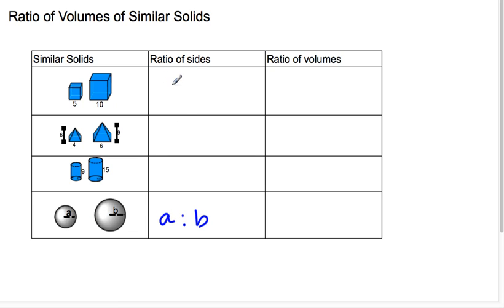So the ratio of the sides, first thing I see is I have 5. Now when I take the volume of those that means I'm going to get 5 to the third because that's how you find the volume of a cube. 10 to the third and that simplifies down 1 to 8.